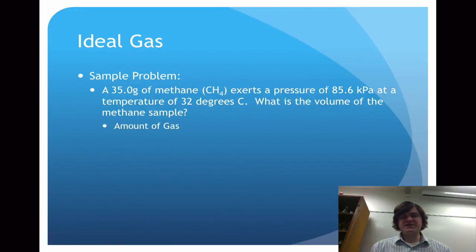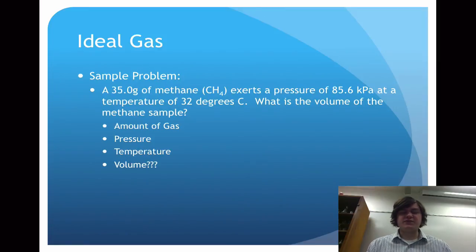So we're given amount of gas, 35.0 grams. The pressure is given to us in kilopascals, the temperature is given to us in Celsius, and it is asking for the volume. So we are given three out of the four variables, and we need to solve for the last variable. We will use PV equals NRT to solve for volume.